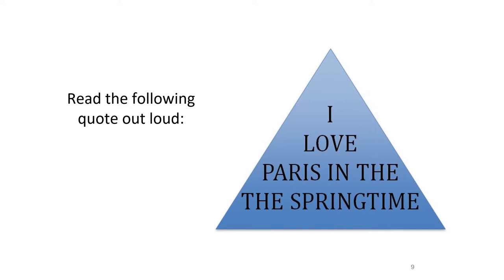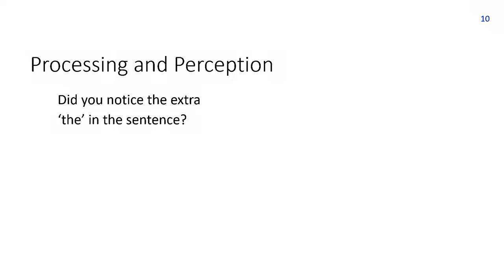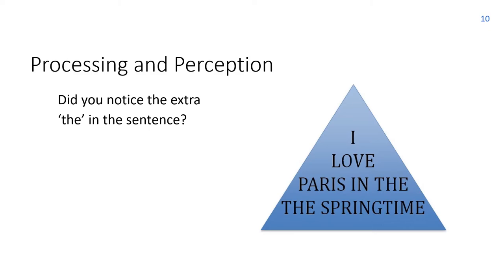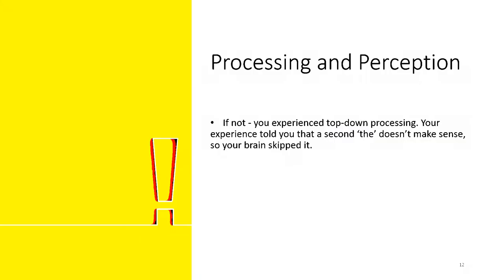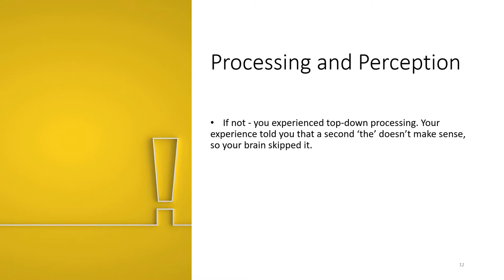Now read this quote out loud. Did you notice the extra 'the' in the sentence? If not, it's likely because you were reading from a top-down approach. Having a second 'the' doesn't make sense — our brain knows this and doesn't expect it, so we tend to skip right over it. In other words, your past experience changed the way you perceive the writing in the triangle. A beginning reader using bottom-up approaches, carefully attending to each piece, would be less likely to make this error.